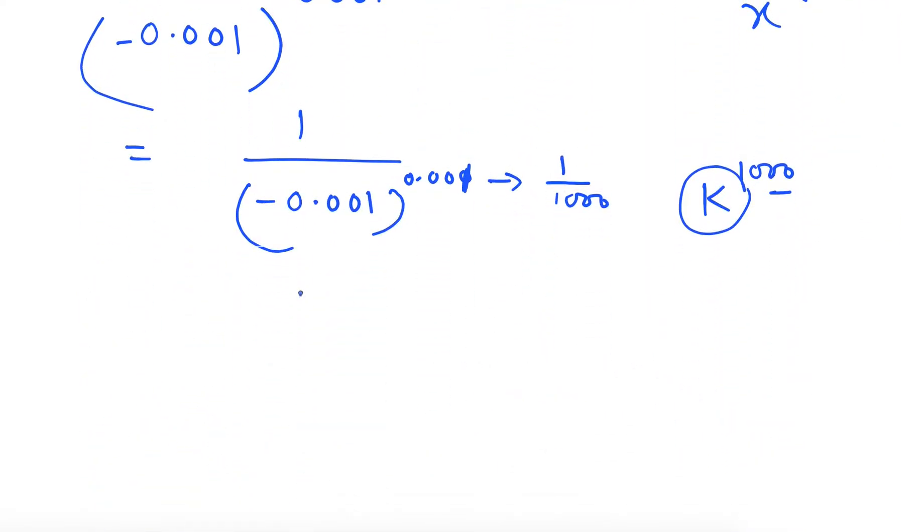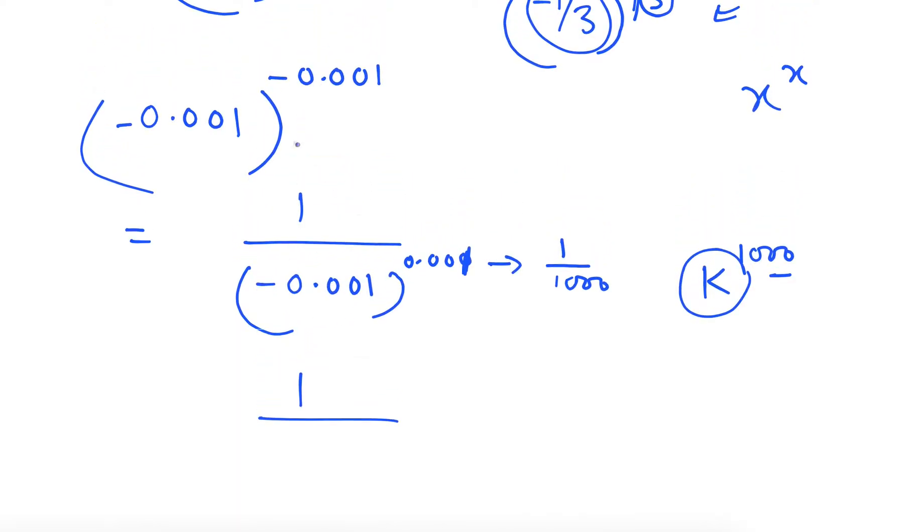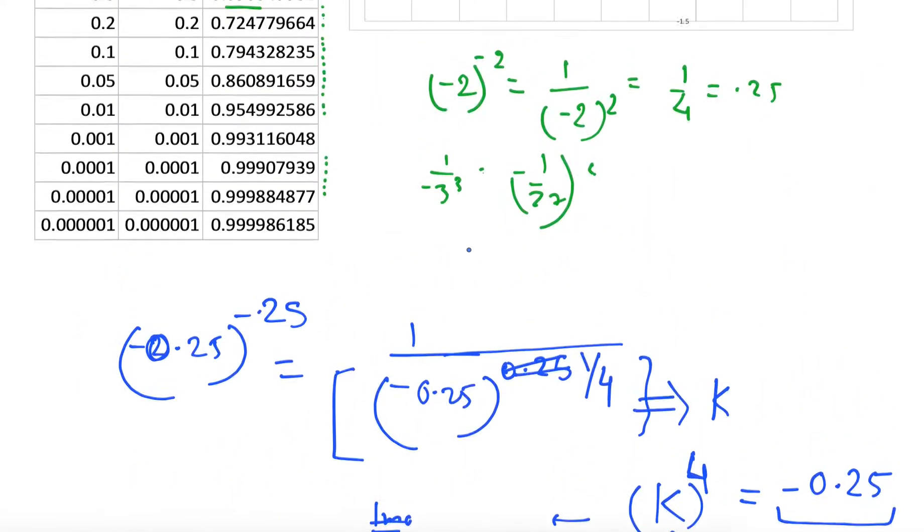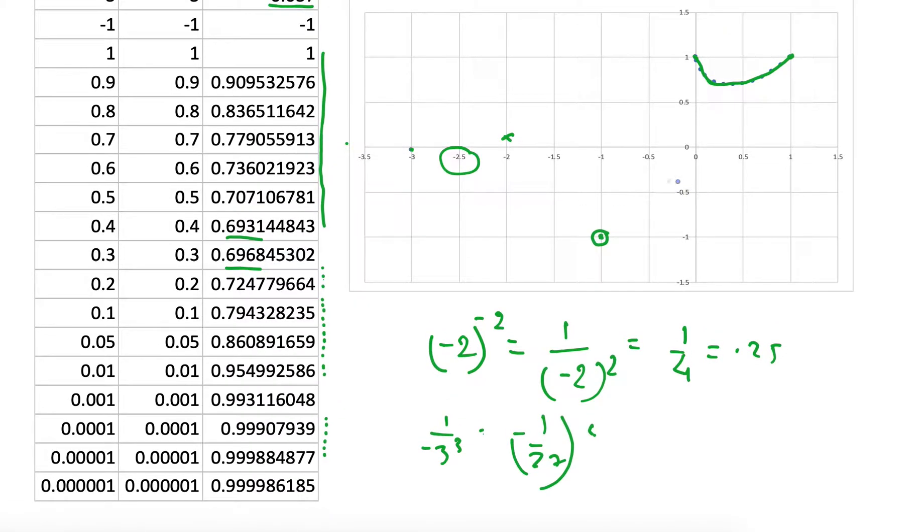But if we take a number which is very close to this one, which is, so instead of 1 over 1000, minus 1 over 1000, we take minus 1 over 999. So it will be almost close to this one. And we raise to the power of minus 1 to the power 999. Then again, we can find the value. So for all odd powers, we can find the value. For even powers, we will not find. So the limit on the left side is not defined.